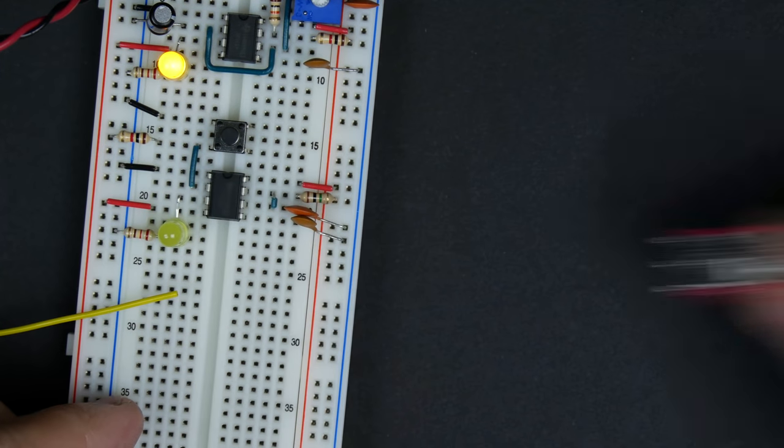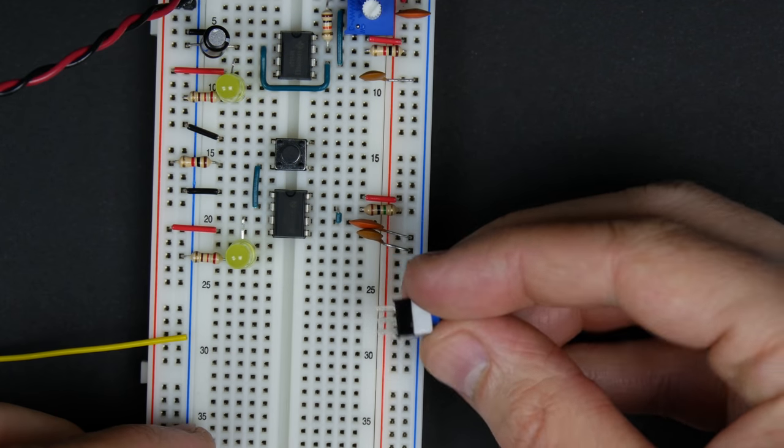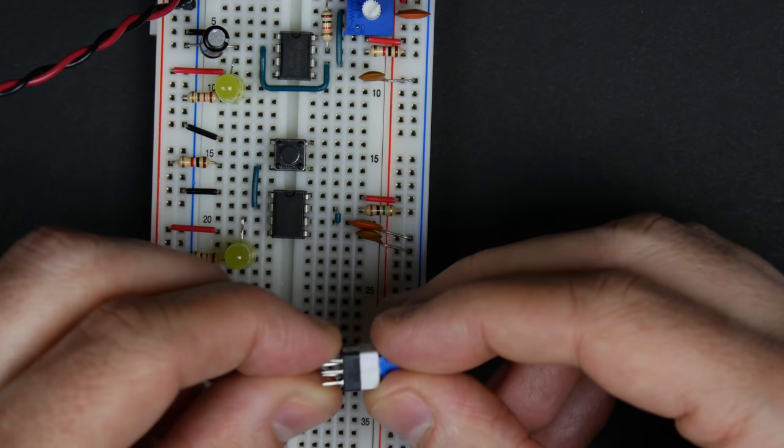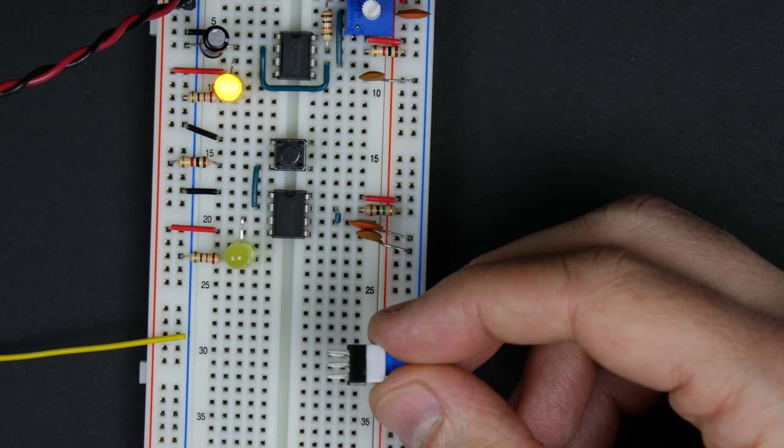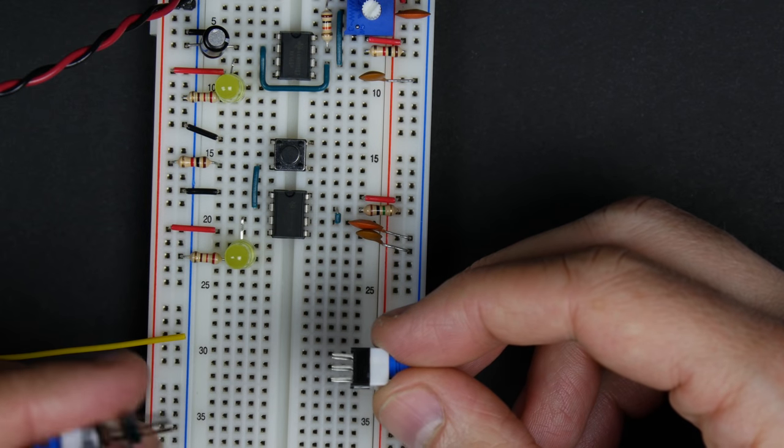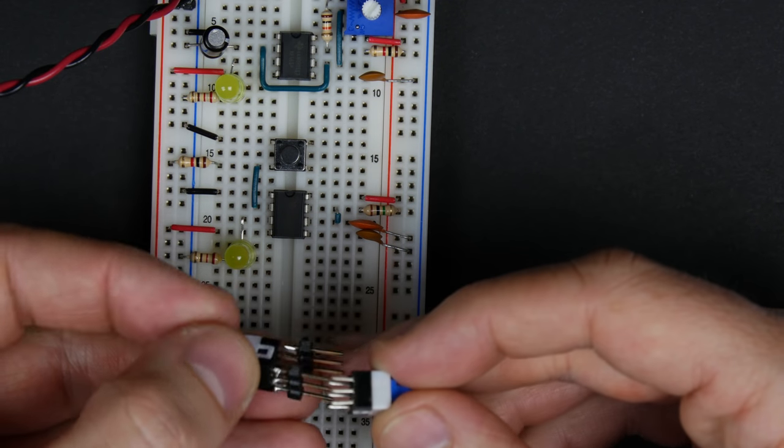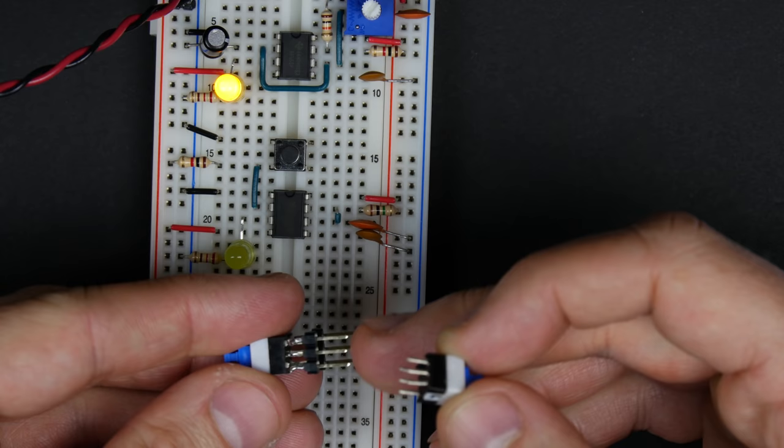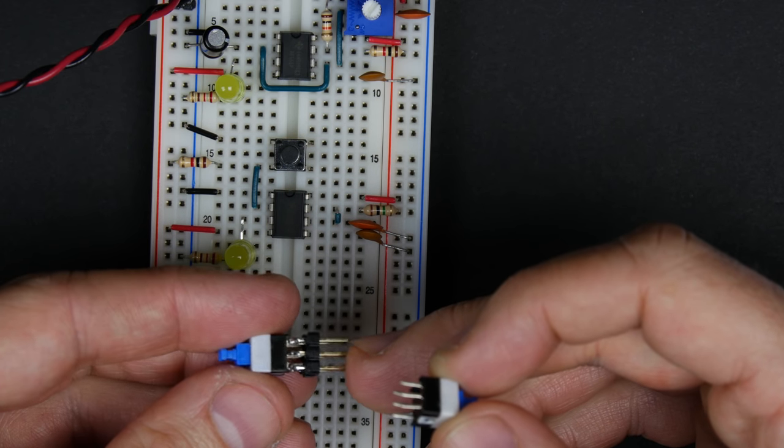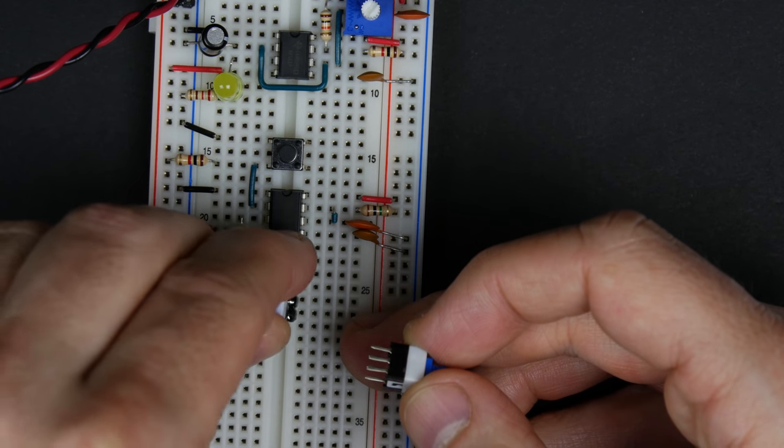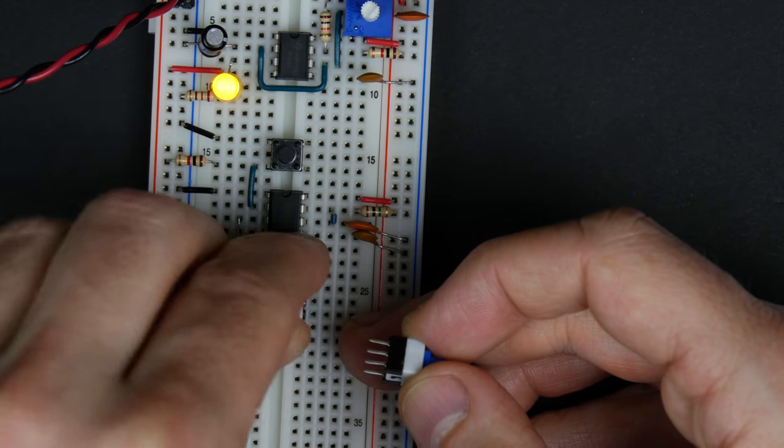Of course, this doesn't plug into my breadboard, and annoyingly, neither does this. This is actually just a little bit too, this pin spacing is a little bit too close together to fit into the breadboard. And so what I've done is gone ahead and soldered these little header pins to the switch, and so that fits in very nicely into the breadboard.